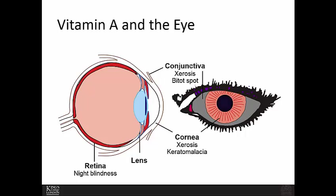Vitamin A in the eye: a cross-section shows the anatomy, including the lens, cornea, and retina at the back of the eye. The retina is mainly affected in the night blindness stages of vitamin A deficiency. However, as it progresses and becomes more severe, the cornea and conjunctiva become affected, where you get xerosis and Bitot spots as well as keratomalacia.